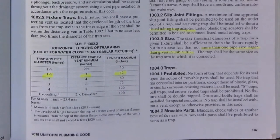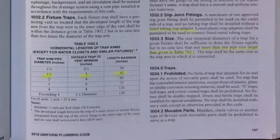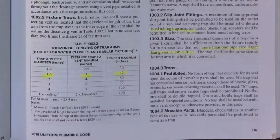Traps that are prohibited: no form of trap that depends on a movable part for its seal shall be used. No trap with concealed interior partitions, except those of plastic, glass, or similar corrosion-resistant materials, shall be used. S-traps, bell traps, and crown-vented traps are prohibited. No fixture shall be double-trapped. Drum and bottle traps shall be installed for special conditions only. No trap shall be installed without a vent except as otherwise provided. Bladders, check valves, or other devices with movable parts shall be prohibited from serving as a trap.